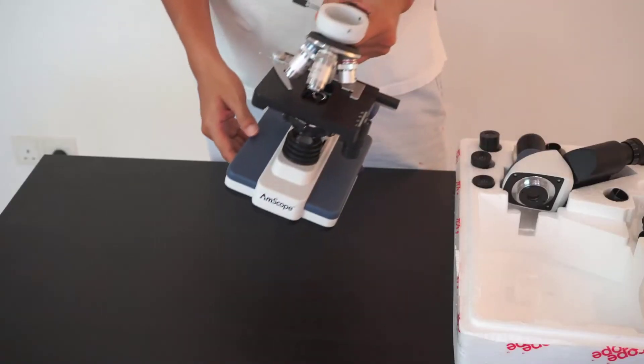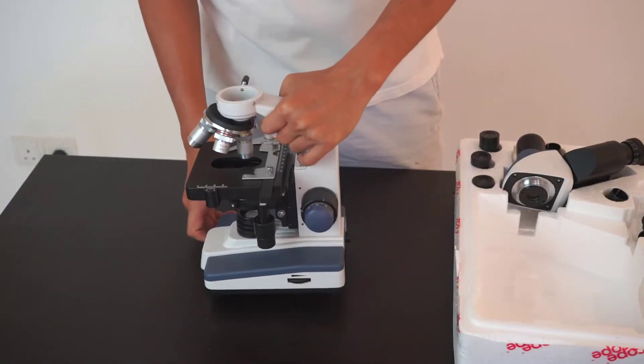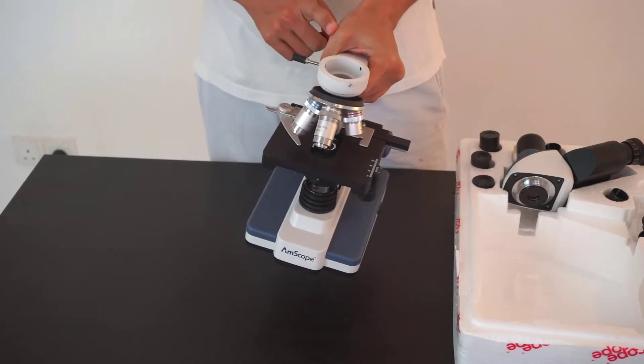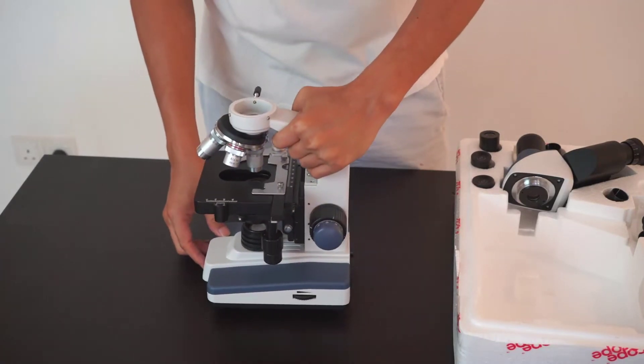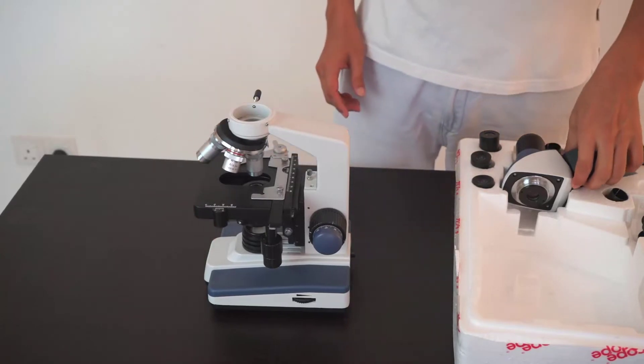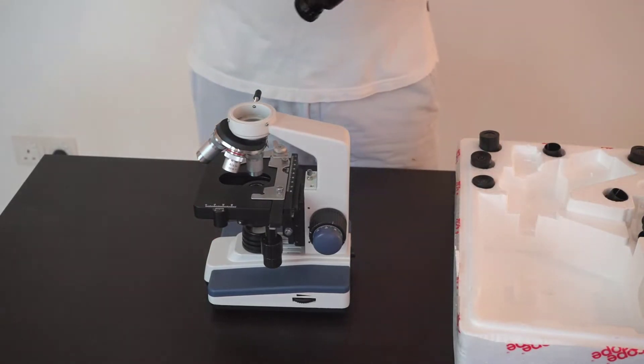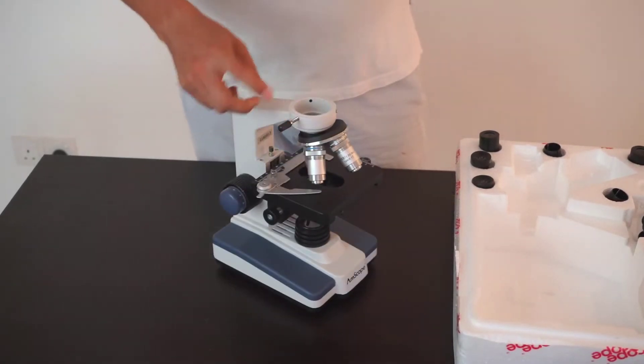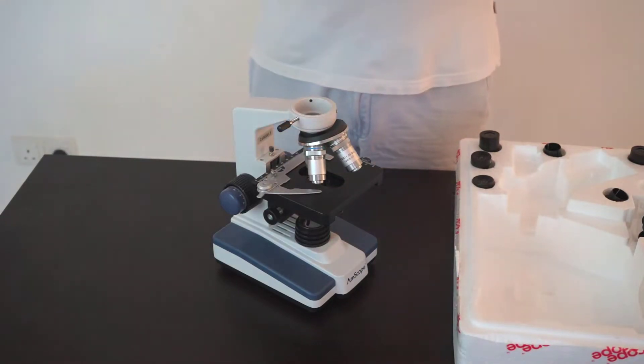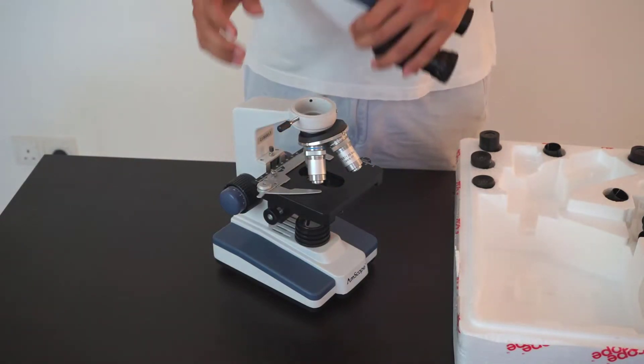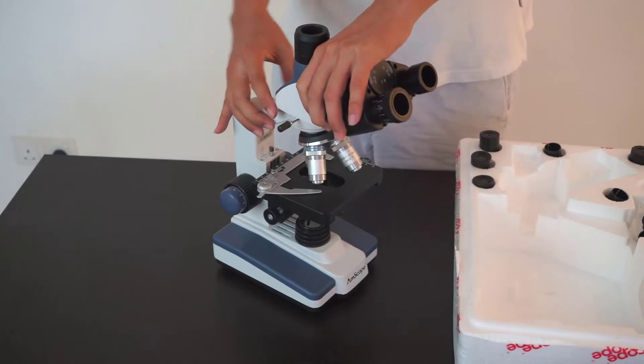This is the body of the microscope. To hold the microscope, make sure you're holding the neck. Next we have the binocular head of the microscope. To mount it, look for the pin here. You can unscrew the pin and put in the trinocular head of the microscope.